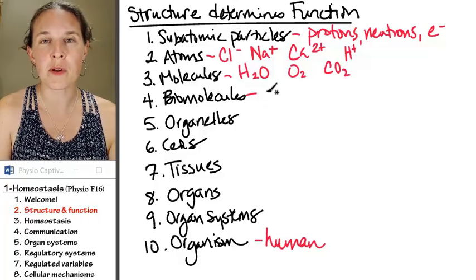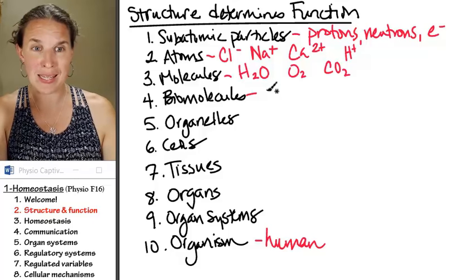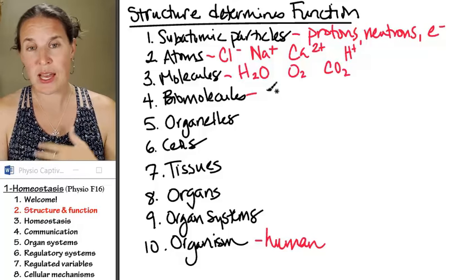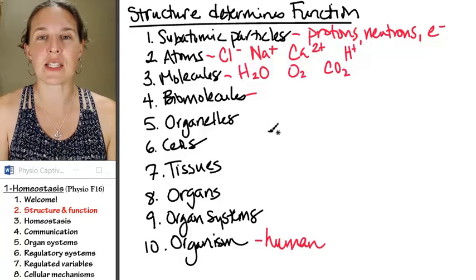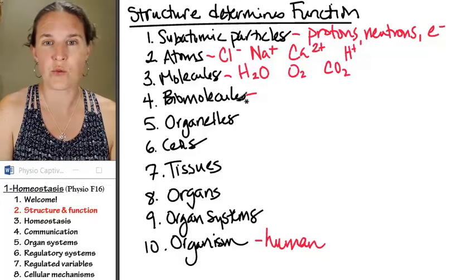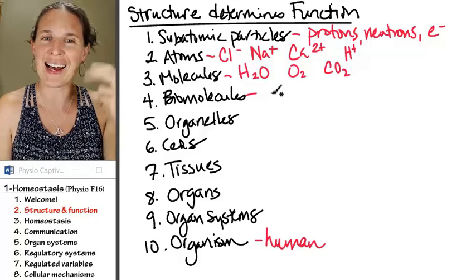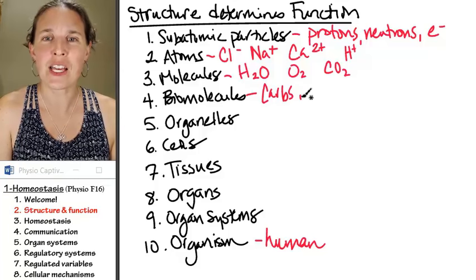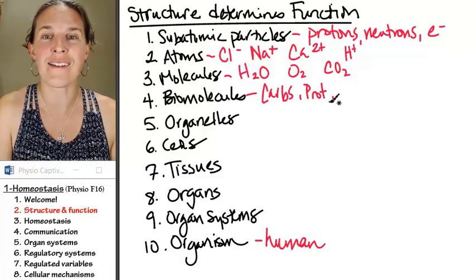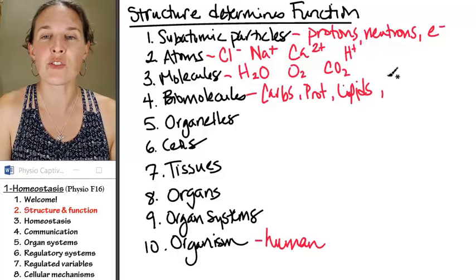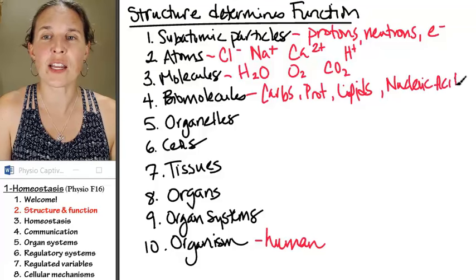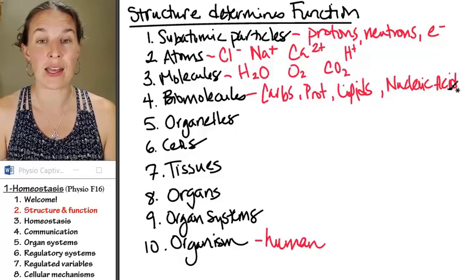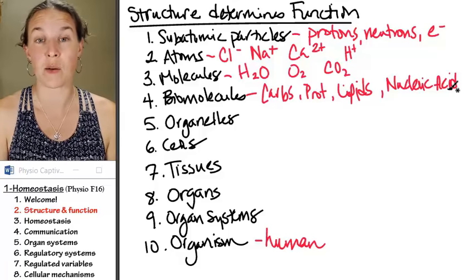If we take molecules and atoms and put them together, we can build biomolecules. Biomolecules are just big molecules that are found in living systems, and there are four categories. You got your carbs, you got your proteins, you got your lipids — those are your fatty fats — and you have your nucleic acids. Nucleic acids, don't forget — that's like DNA and RNA — are very important biomolecules.